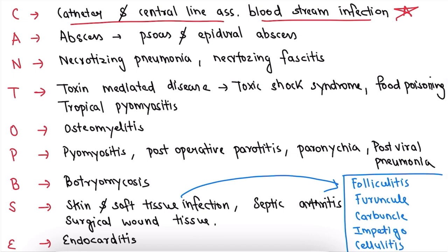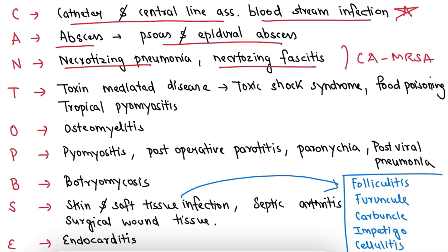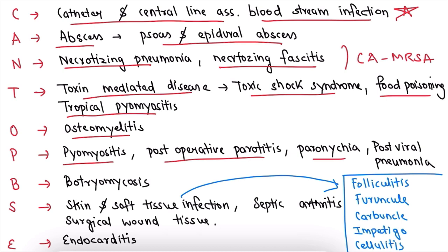A is for abscess: source and epidural abscess, necrotizing pneumonia, and necrotizing fasciitis — both associated with CA-MRSA. T is for toxin-mediated diseases: toxic shock syndrome, food poisoning by enterotoxin, and tropical pyomyositis. O is for osteomyelitis. P is for pyomyositis, post-operative parotitis, paronychia, and post-viral pneumonia. B is for botryomycosis — a mycetoma-like condition that appears fungal but is actually a Staph. aureus infection.